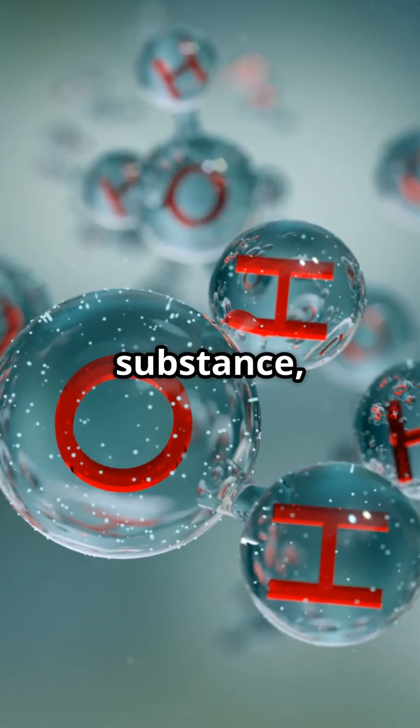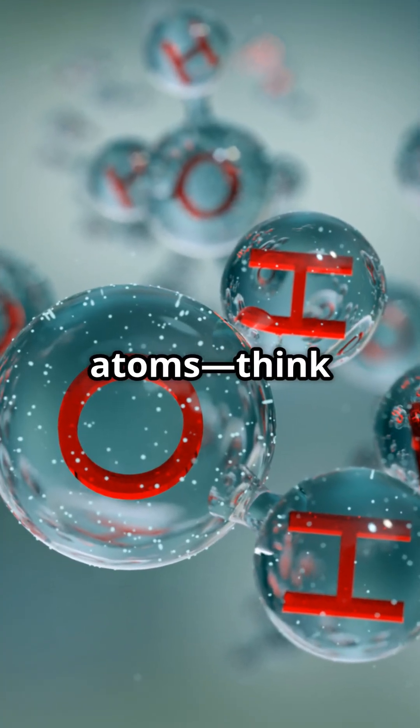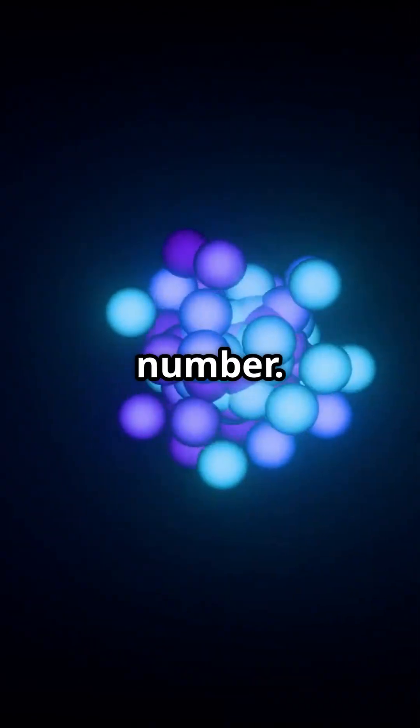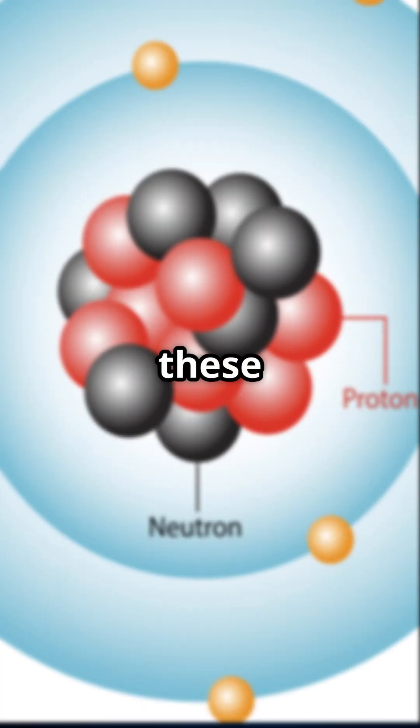An element is a pure substance, and each is defined by the number of protons in its atoms. Think of this as its ID number. The periodic table helps us keep track of all these elements.